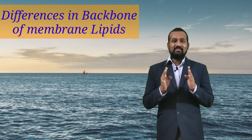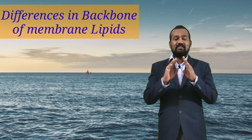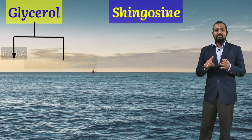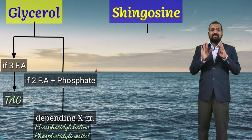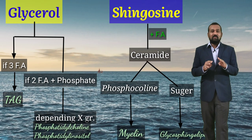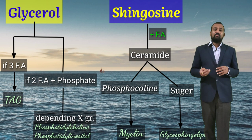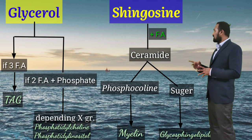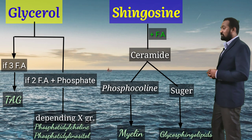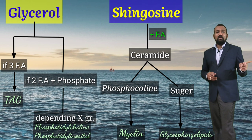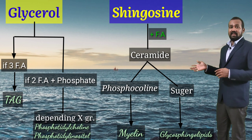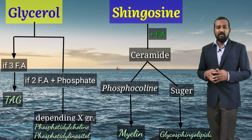So friends, I am sure you have understood the differences in backbone structures that highlight the differences in various lipids occurring in a membrane. Glycerol and sphingosine are the main basis of differences between these lipid types. This lecture has explained various aspects of membrane lipids, and the chart shown here summarizes how on the basis of glycerol backbone versus sphingosine backbone we have the different types highlighted.